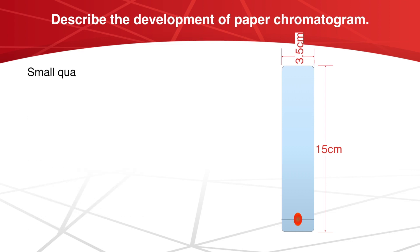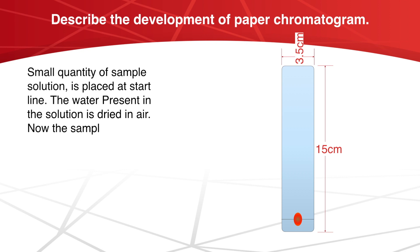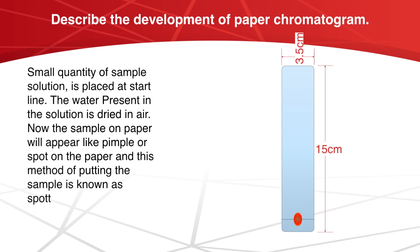A small quantity of sample solution is placed at the start line. The water present in the solution is dried in air. Now the sample on paper will appear like a pimple or spot on the paper. This method of putting the sample is known as spotting.